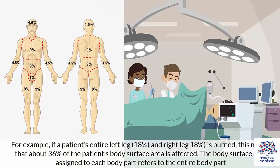For example, if a patient's entire left leg, 18%, and entire right leg, 18%, are burned, this means that about 36% of the patient's body surface area is affected.